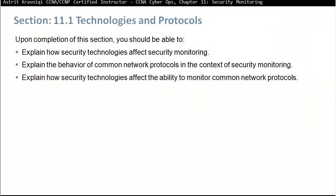Upon completion of this section, you should be able to explain how security technologies affect security monitoring — for example, NAT (network address translation) and how that affects security monitoring, as well as encrypted traffic. We also explain the behavior of common network protocols in the context of security monitoring, such as DNS being used for data exfiltration.